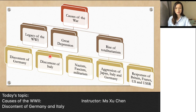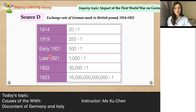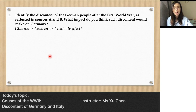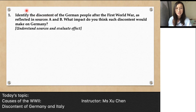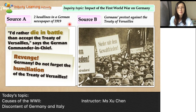So what was the reaction of the German people when they heard their country was humiliated? We have two sources: Source A shows two headlines from a German newspaper in 1919, and Source B shows a German protest against the Treaty of Versailles. The question asks us to identify the discontent of German people after the First World War and what impact such discontent would make on Germany.